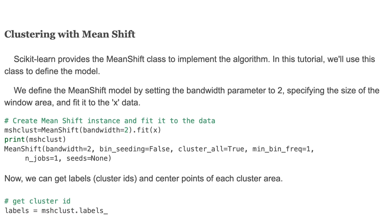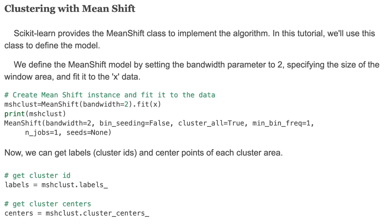Scikit-learn provides the MeanShift class to implement the algorithm. In this tutorial we'll use this class to define the model. We define the MeanShift model by setting the bandwidth parameter to 2, specifying the size of the window area, and fit it to the X data. As you may have noted, we didn't define any cluster number here. Now we can get labels or cluster IDs and the center points of each cluster area.